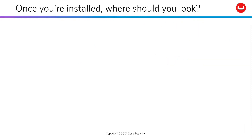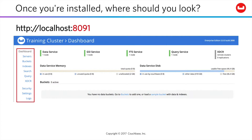Once you're installed, go to localhost:8091. If you're new to Couchbase 5, you'll notice that the menu is now along the left-hand side — that's a change from prior versions.